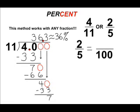5 can be divided into 100 twenty times, or 5 times 20 is 100. Because it would take a factor of 20 to increase 5 to 100, to write an equivalent fraction we are also going to increase the numerator by a factor of 20 as well. 2 times 20 is 40, so we would say 40 out of 100 is equivalent to 2 out of 5.